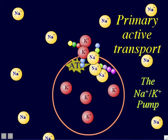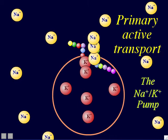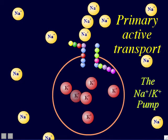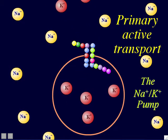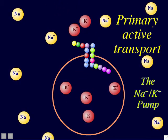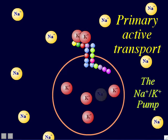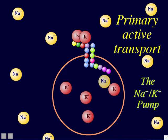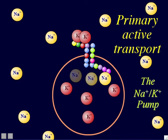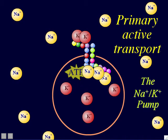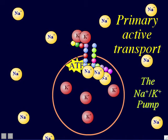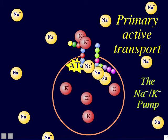Getting back to the original review question: the sodium-potassium pump is doing primary active transport for both the potassium ions and sodium ions simultaneously, using ATP as the energy source.